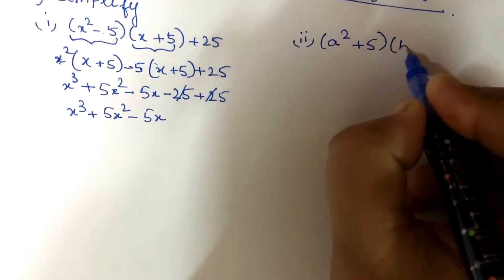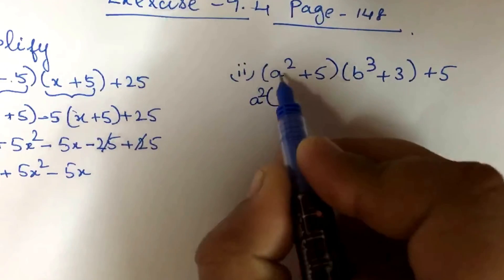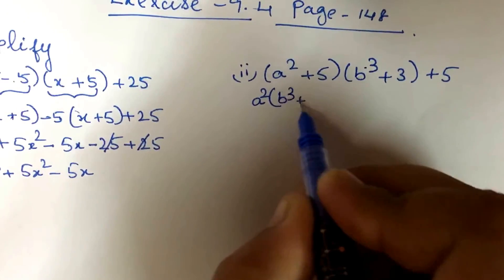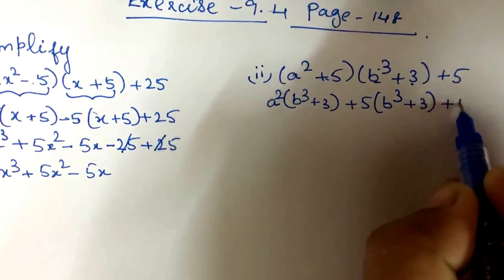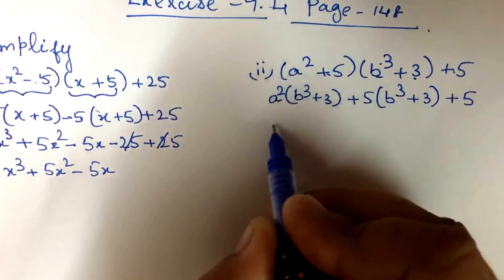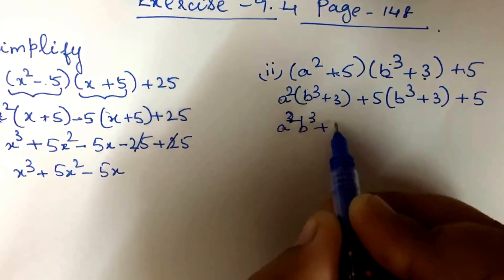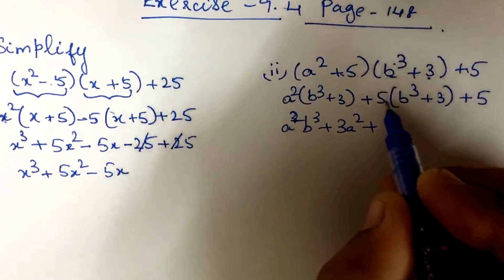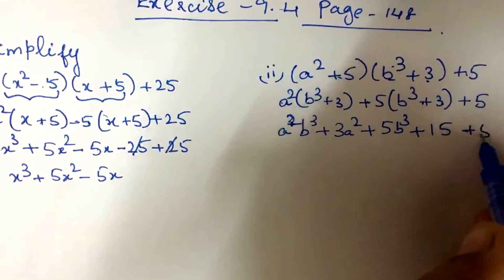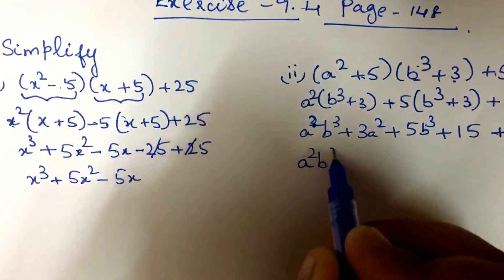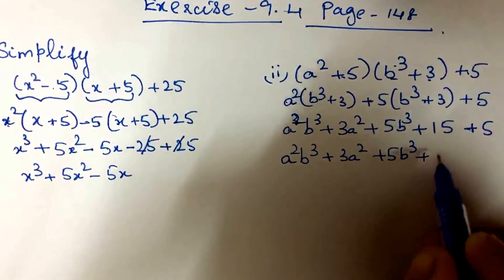Question 2: (a² + 5) into (b³ + 3 + 5). Taking a² into the second expression: a² into b³ is a²b³, plus a² into 3 is 3a², plus 5 into b³ is 5b³, plus 5 into 3 is 15, and plus 5. So: a²b³ + 3a² + 5b³ + 15 + 5 = a²b³ + 3a² + 5b³ + 20.